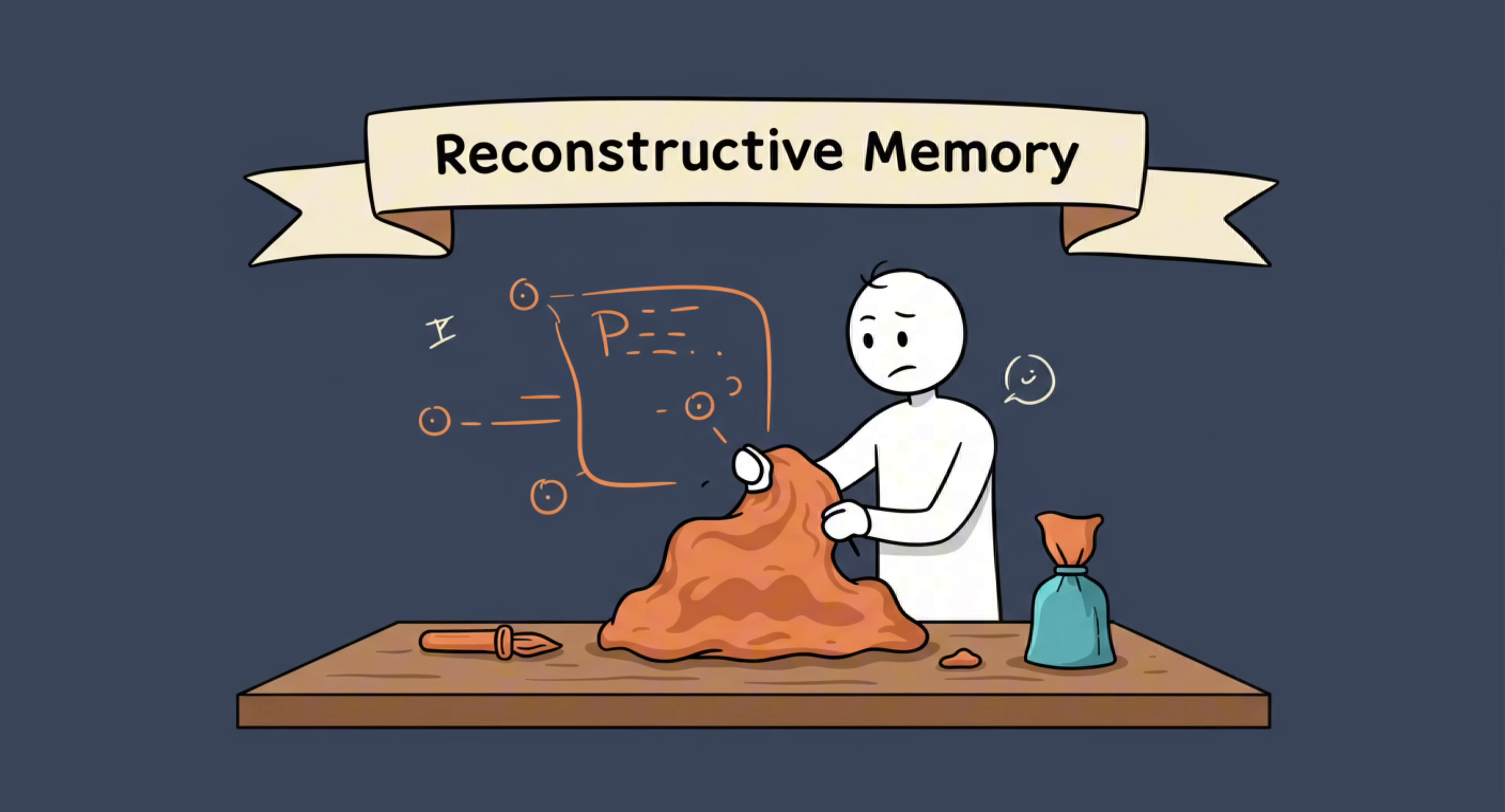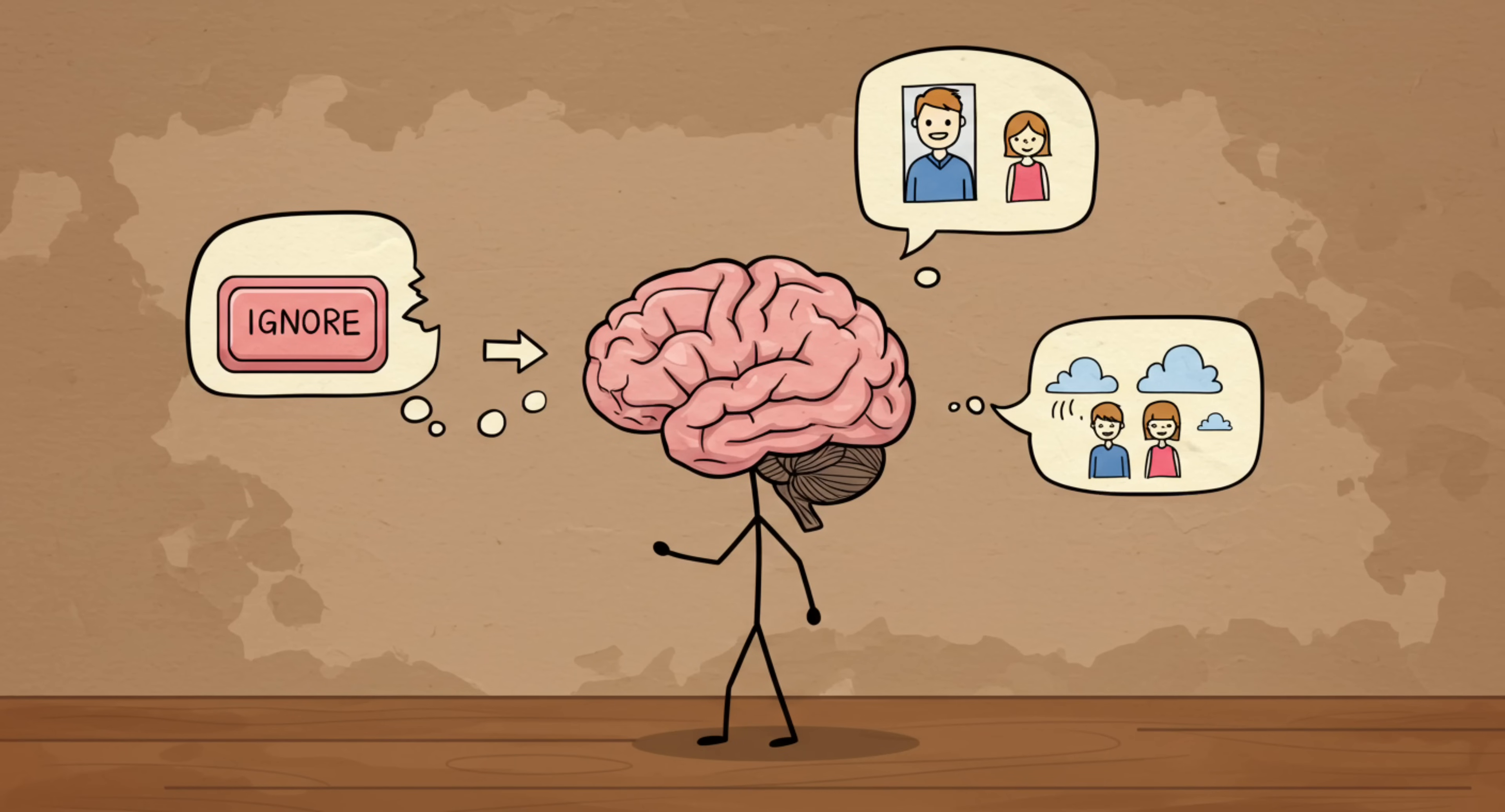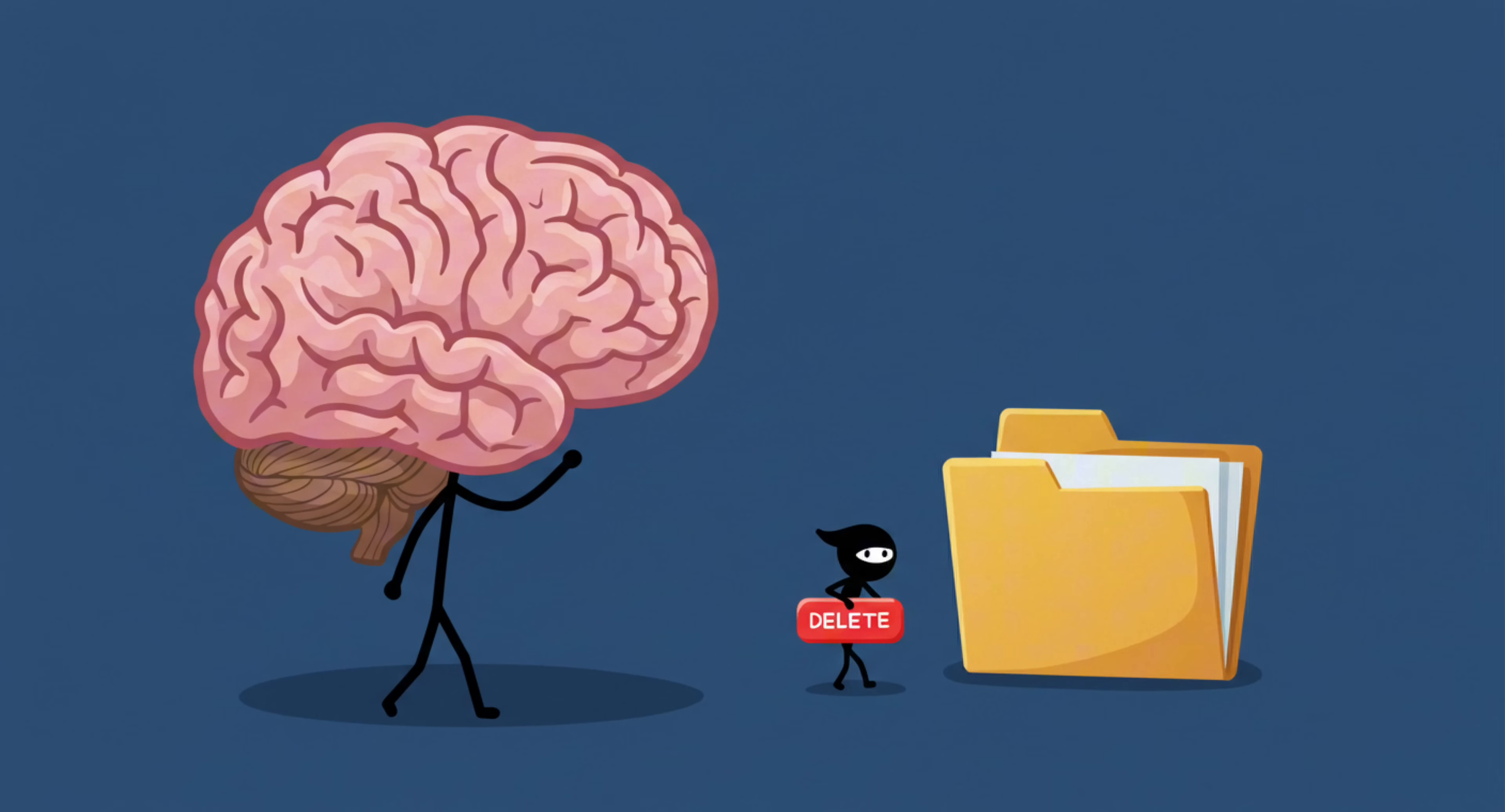This is called reconstructive memory, and it means your brain actively reshapes your past to fit your present understanding. That random sensory flash you have from when you were maybe two? Your adult brain will either ignore it, overwrite it with family stories, or decide it's just a dream. Over time, the stuff that doesn't make narrative sense gets quietly deleted.